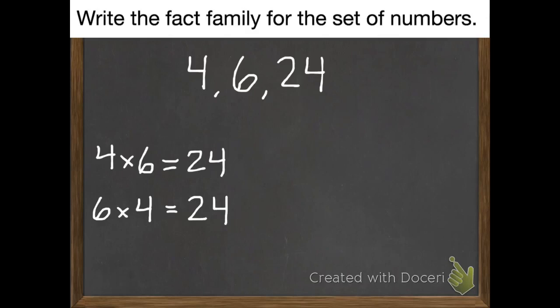Now I need division. So we're going to start out backwards. Instead of getting a product of 24, we're going to start with our 24 as our dividend. So 24 divided by 6 equals 4. I can also start with 24 and divide by 4 to get 6.